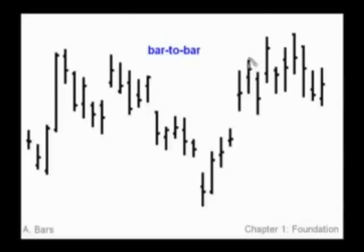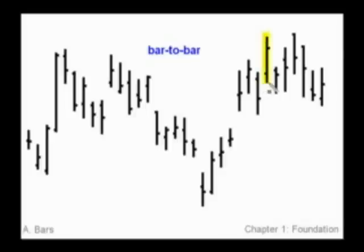Once you have this bar here and then it follows with this bar, we no longer have a higher high and a higher low. Instead we have a lower high and a lower low. We can say that the trend has changed — the bar-to-bar trend has changed from up to down. Now just as quickly, in this particular situation, we moved up again with the very next bar showing a higher high and a higher low. So by definition, this is how we define uptrends and downtrends.